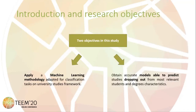There are two objectives in this study. First, apply a machine learning methodology adapted for classification tasks on a university studies framework. Second, obtain accurate models able to predict studies dropping out from the most relevant student and degree characteristics.